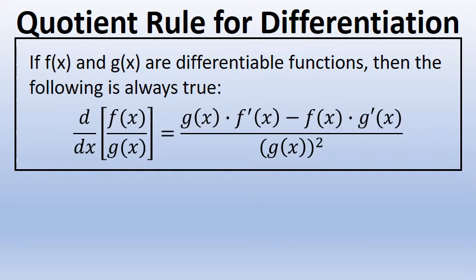The quotient rule states that the derivative of f of x over g of x is equal to g of x times the derivative of f of x minus f of x times the derivative of g of x all over g of x squared.